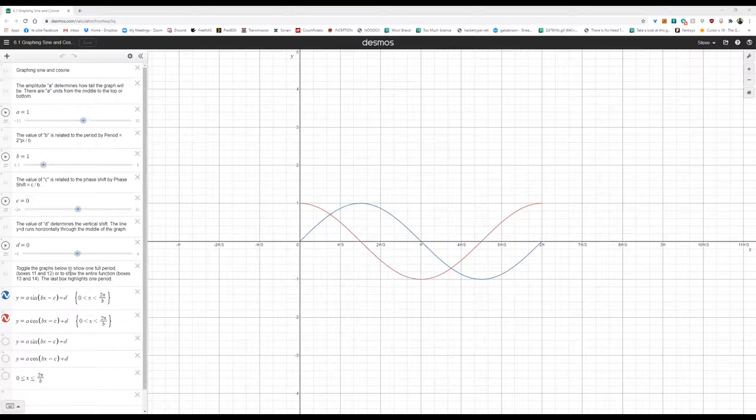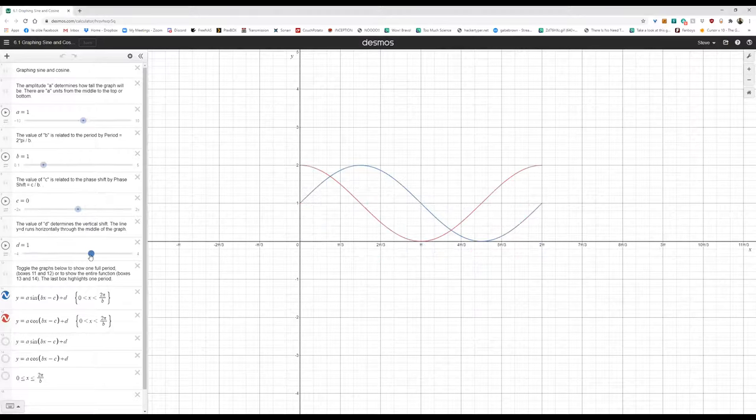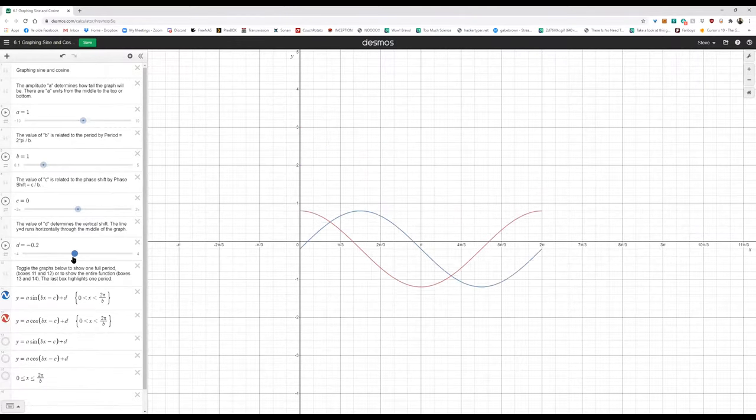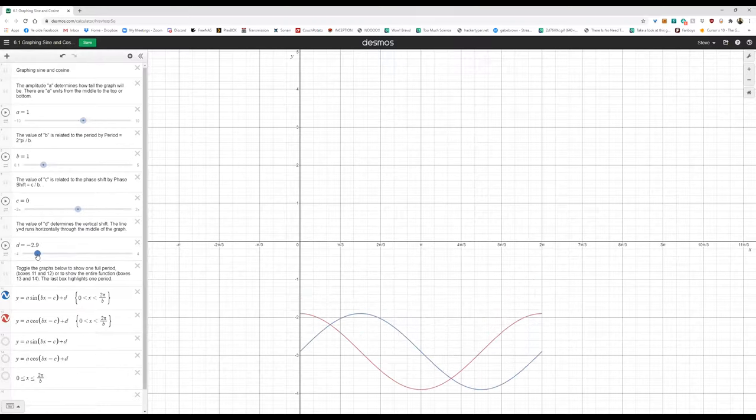So I'm just adding a vertical shift to the end where either I'm adding some number to move the graph up. Seen here, if I move d up to 2, I've taken the whole graph and just shifted it up two units. Or if d is negative, I could bring that graph down below the x-axis. Seen here as I move d down to negative 3, I shift that graph all the way down.